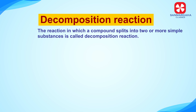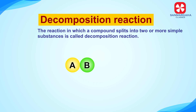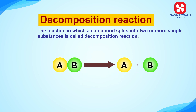Let's say we have a substance AB. It decomposes or breaks down into two substances A and B. AB undergoes a decomposition reaction and gives A plus B. Remember, in a decomposition reaction there is only one reactant.